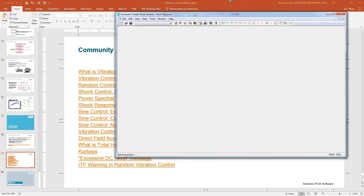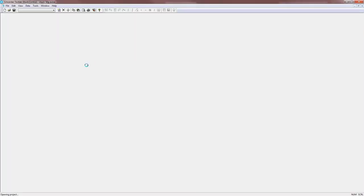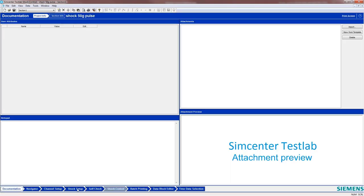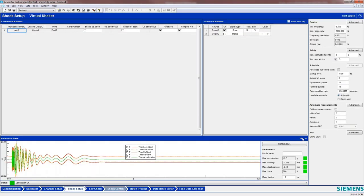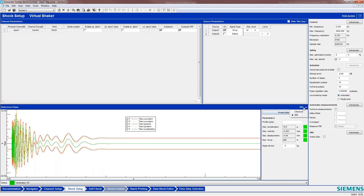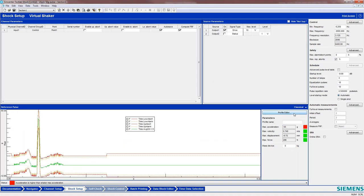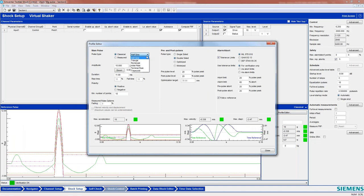Here we have our shock control software. First, I'll show you where that classic shock control is defined. Under shock setup, there is a drop-down here where we can either do classic or SRS. If I do classical and I come into my profile editor, you can see those classic main pulse shapes that we were talking about. You just select one of these main shapes, and here are the post-pulse shapes that we were talking about before as well. This is where you would define your target profile for your classic shock test.